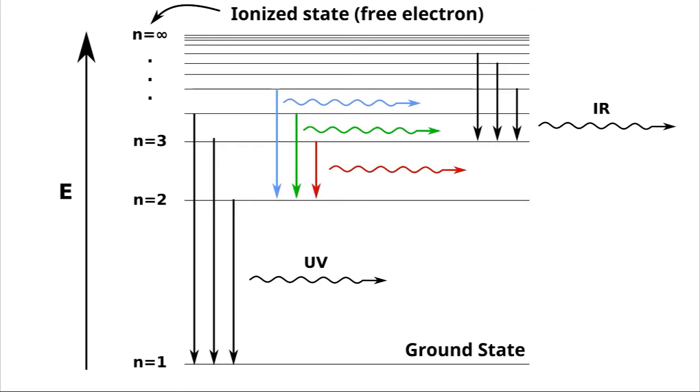Then, if you go to the next energy level, n equals 3, well, now these energy differences are actually so small that our hydrogen is going to radiate in the infrared system, which is lower energy than red light.